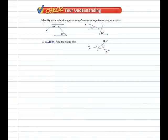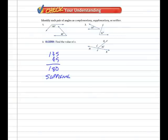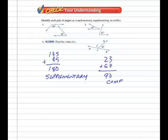Identify each pair of angles as complementary, supplementary, or neither. In Example 1, 135 plus 45 is indeed 180, making them supplementary. In Example 2, 23 plus 67 is in fact 90 degrees. Therefore, those two angles are considered to be complementary.